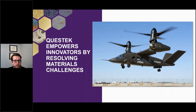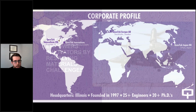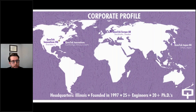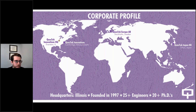Questec is a small business focused on empowering innovators to resolve materials challenges. Questec is primarily located in Evanston, Illinois, just outside of Chicago, with additional offices in Sweden to serve European clients, as well as Tokyo to serve Japanese clients, and a small office in the Cambridge area near MIT. Questec has been around since 1997, and we have a team of about 45 folks here in Chicago, with over 20 PhDs on staff.